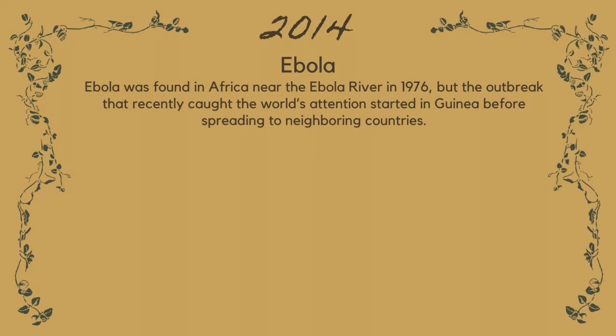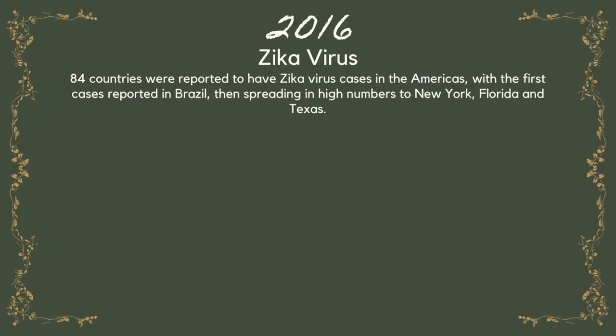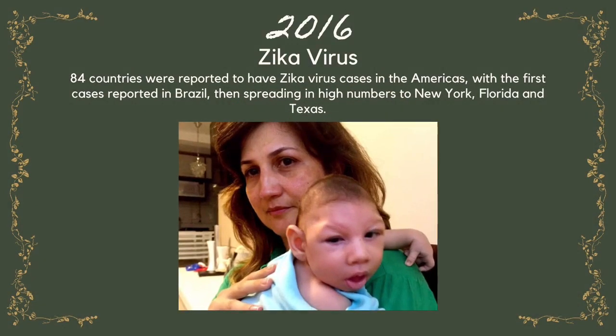2014 — Ebola. Ebola was found in Africa near the Ebola River in 1976, but the outbreak that recently caught the world's attention started in Guinea before spreading to neighboring countries. 2016 — Zika virus. 84 countries were reported to have Zika virus cases in the Americas, with the first cases reported in Brazil, then spreading in high numbers to New York, Florida, and Texas.